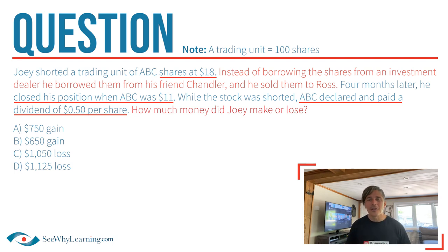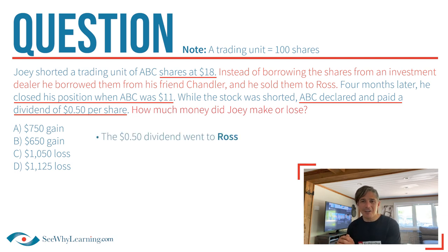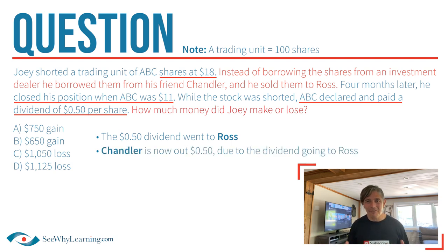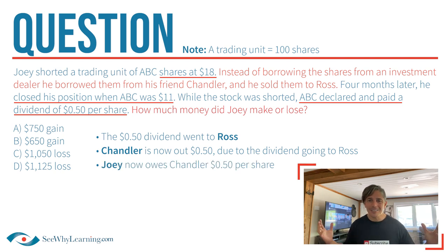I've done this to make it a little more personal and easier to understand. When ABC paid the $0.50 dividend, who would have received it? The shares were sold to Ross, so Ross is going to receive that $0.50 dividend — and Chandler isn't going to be happy about that. It's not like Ross will hand Chandler the dividend, and ABC isn't going to pay two dividends. So Chandler is out that $0.50, and he's going to say to Joey: 'You borrowed my shares to make a profit on your price prediction — you owe me $0.50 per share.'